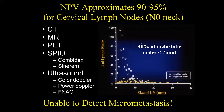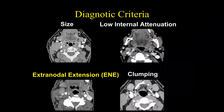Realize that 40% of lymph nodes are less than 7 millimeters, so we cannot detect micrometastasis. Whether we use CT, MR, PET, or nanoparticles, we are not going to be able to detect micrometastasis. Therefore, referring physicians need to treat based on the primary drainage patterns rather than solely on imaging findings, though imaging can help guide treatment.